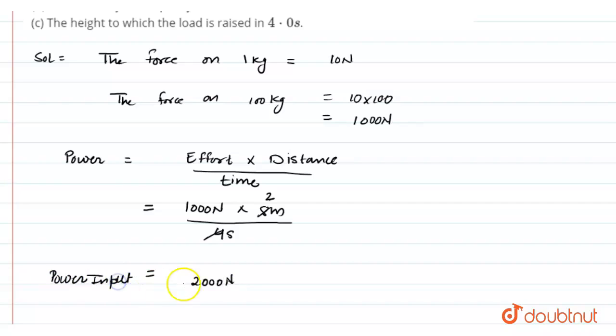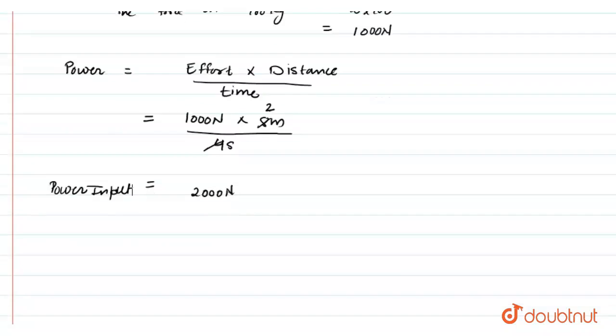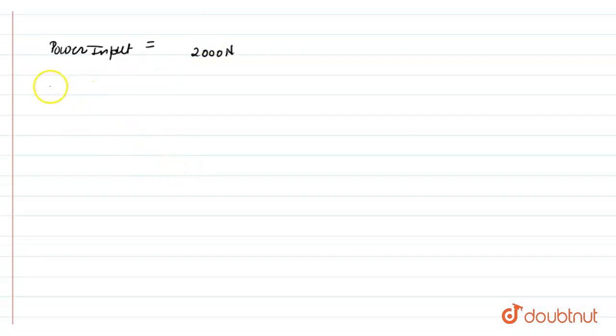Now, in second part we have to find out the efficiency of the pulley. As we know, efficiency is the ratio of mechanical advantage to the velocity ratio. First of all we have to find out the mechanical advantage and then velocity ratio.